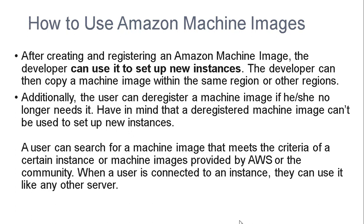How to use Amazon Machine Images: after creating and registering an Amazon Machine Image, the developer can use it to set up a new instance. The developer can then copy a machine image within the same region or to another region. Additionally, the user can deregister a machine image if they no longer need it. A deregistered machine image can't be used to set up a new instance. A user can search for a machine image that meets the criteria of a certain instance from images provided by the AWS community. When connected to an instance, they can use it like any other server.